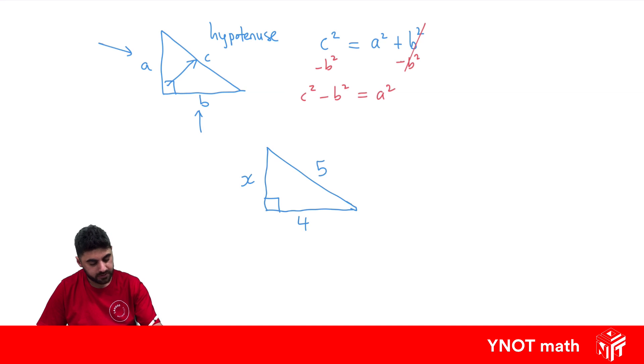Well, using what we just looked at above, we know that X squared equals the hypotenuse squared minus the other shorter side squared. So X squared equals 5 squared, which is 5 times 5, which is 25, minus 4 squared, which is 4 times 4, which is 16. So X squared equals 25 minus 16, which is 9.